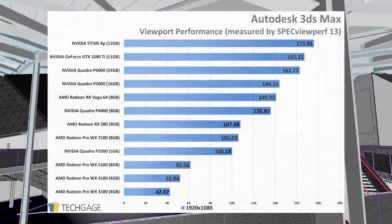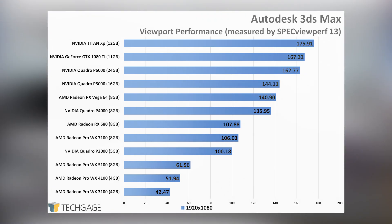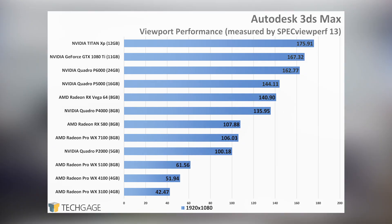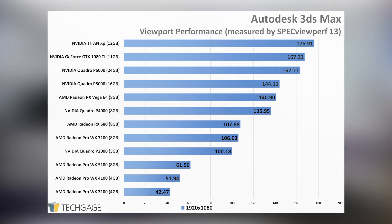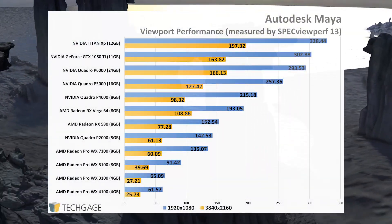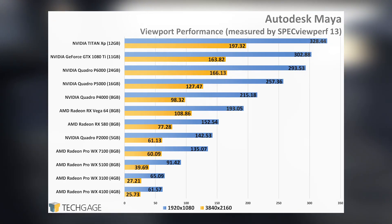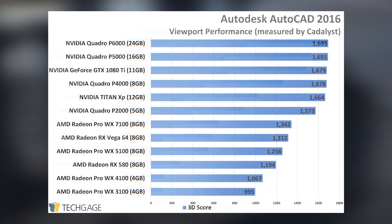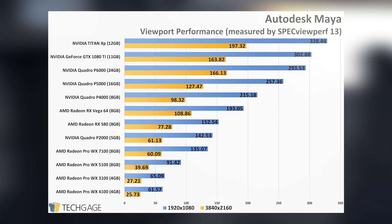3D Studio Max is the only test in SpecViewPerf 13 that doesn't have a 4K option, hence the complete lack of an orange bar in this graph. With these results, we can see that driver optimization seemed to help NVIDIA GPUs, such as the P2000, which fares well against the WX7100 on the Radeon Pro side. Meanwhile, the RX Vega 64 performs almost identically to the P5000, which makes sense since their rated performance is similar. With Maya, we can see the same kind of scaling as we did with 3ds Max. Ultimately, NVIDIA's cards offer the best performance — it's just not a competition. That's three Autodesk applications — 3ds Max, Maya, and AutoCAD — that perform better on NVIDIA. Hopefully, we can see AMD's performance continue to improve with these tools as more driver releases hit.